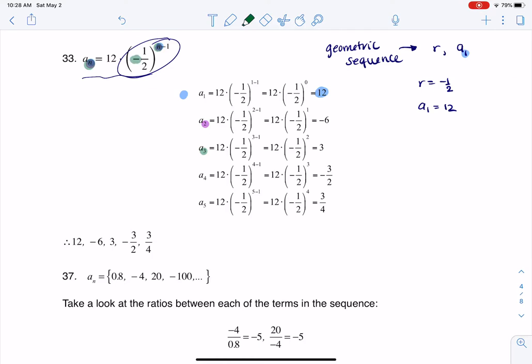And that's great. So then I find my a sub 1, a sub 2, 3, 4, and 5, and that is my sequence.